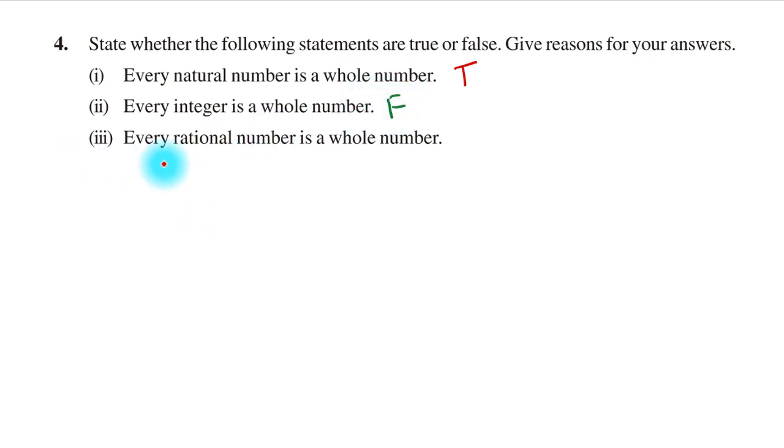Third statement: Every rational number is a whole number. This statement is false because two-thirds is a rational number, but it is not a whole number.